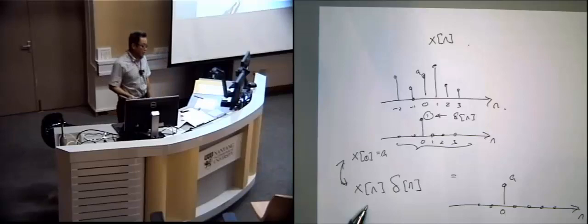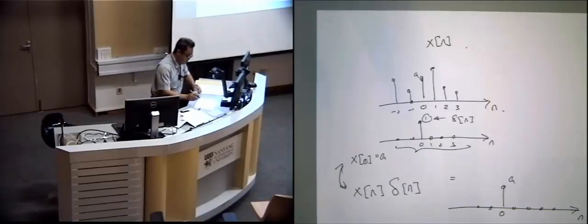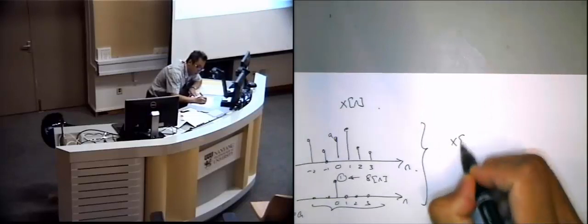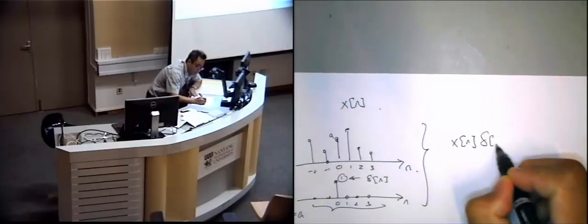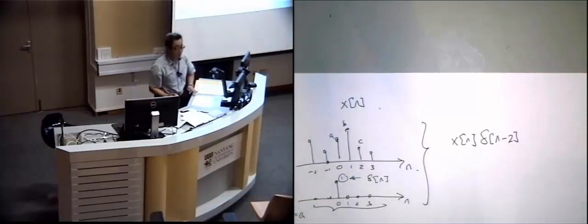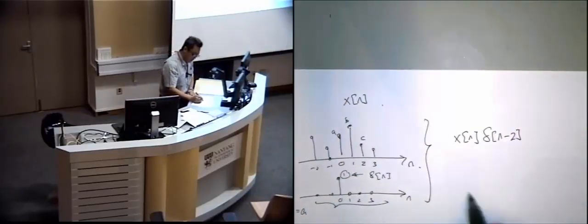This is called the shifting property. Now, what do you think will happen when I do it this way, guys? x of n multiplied by delta(n minus 2). What will come out?